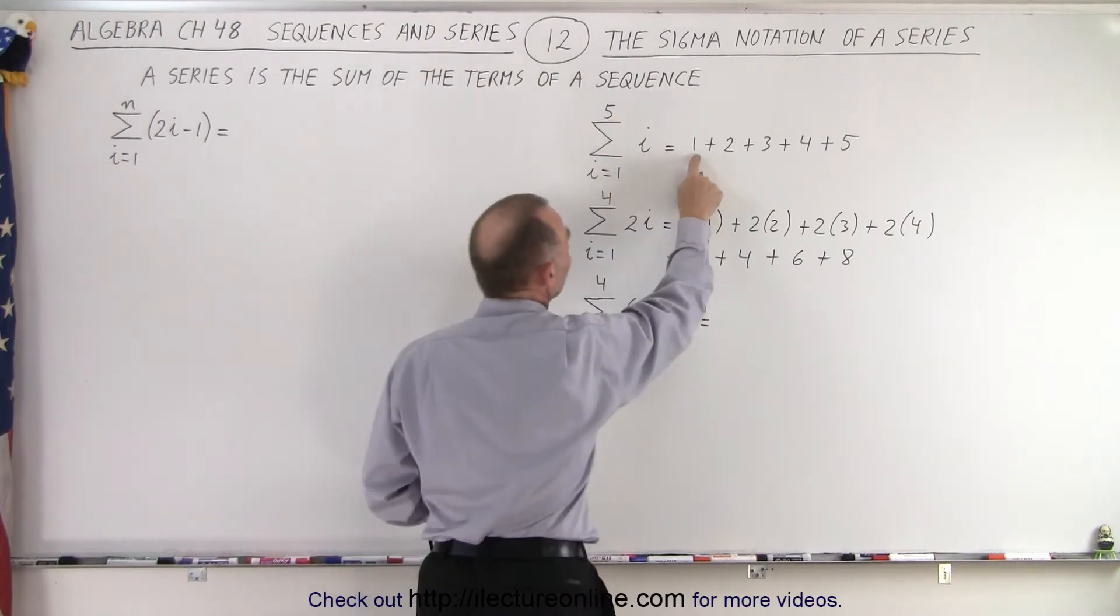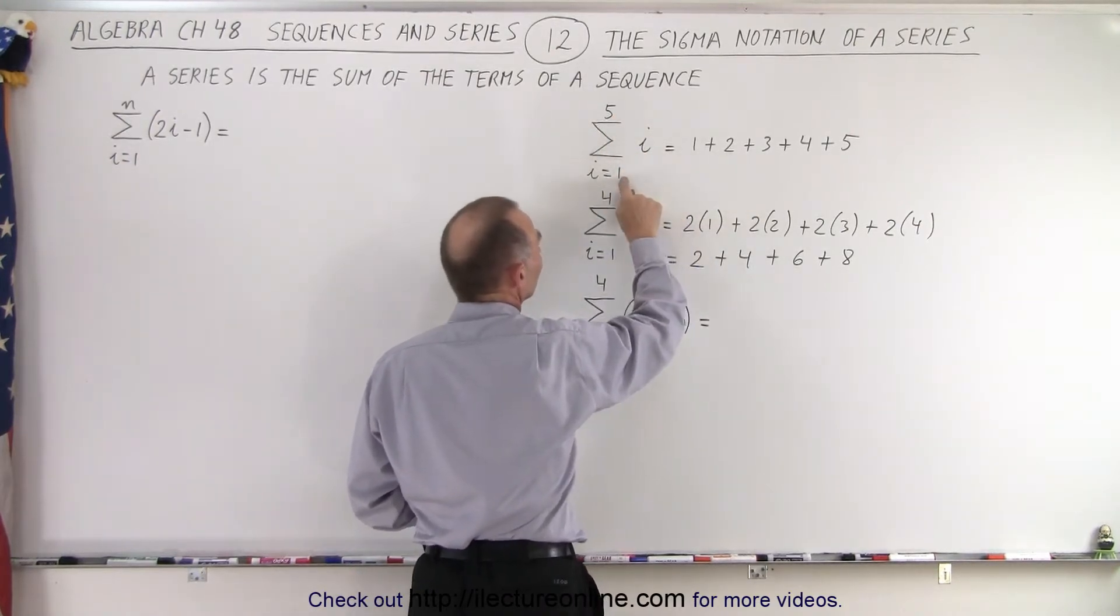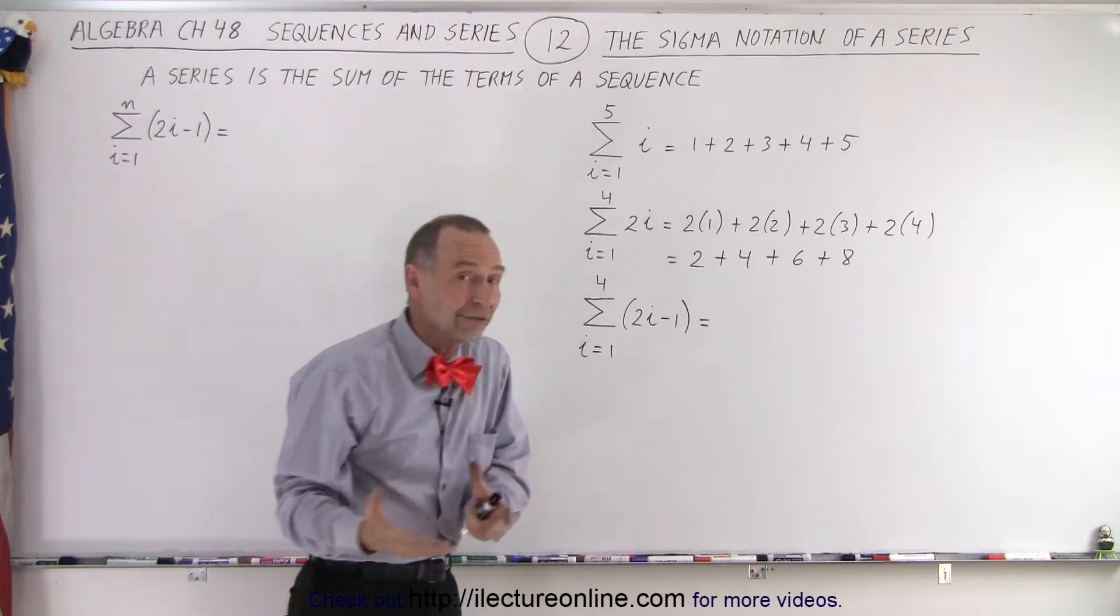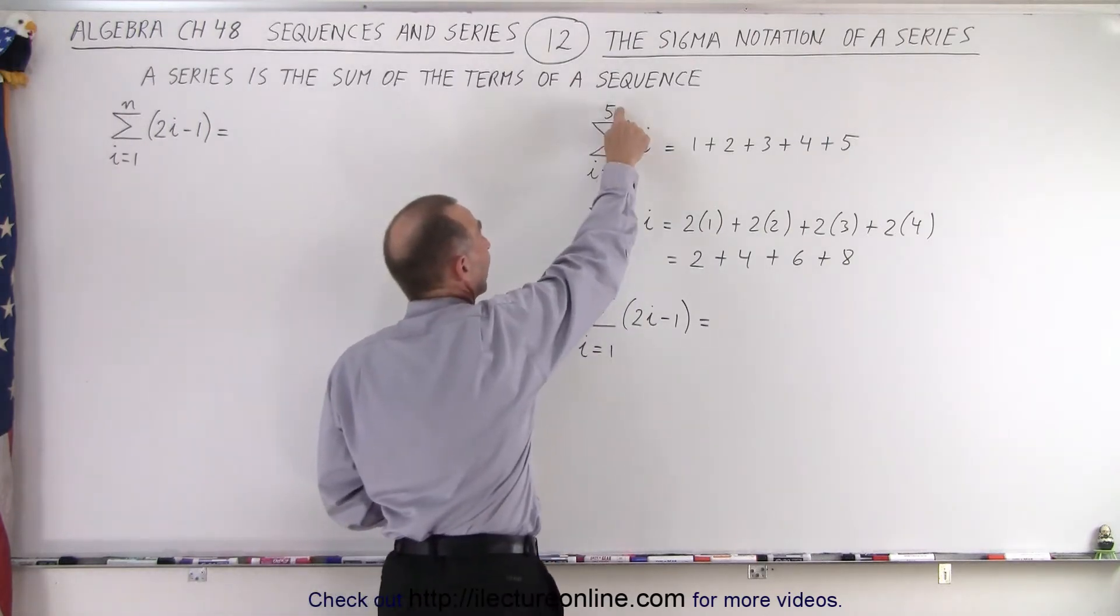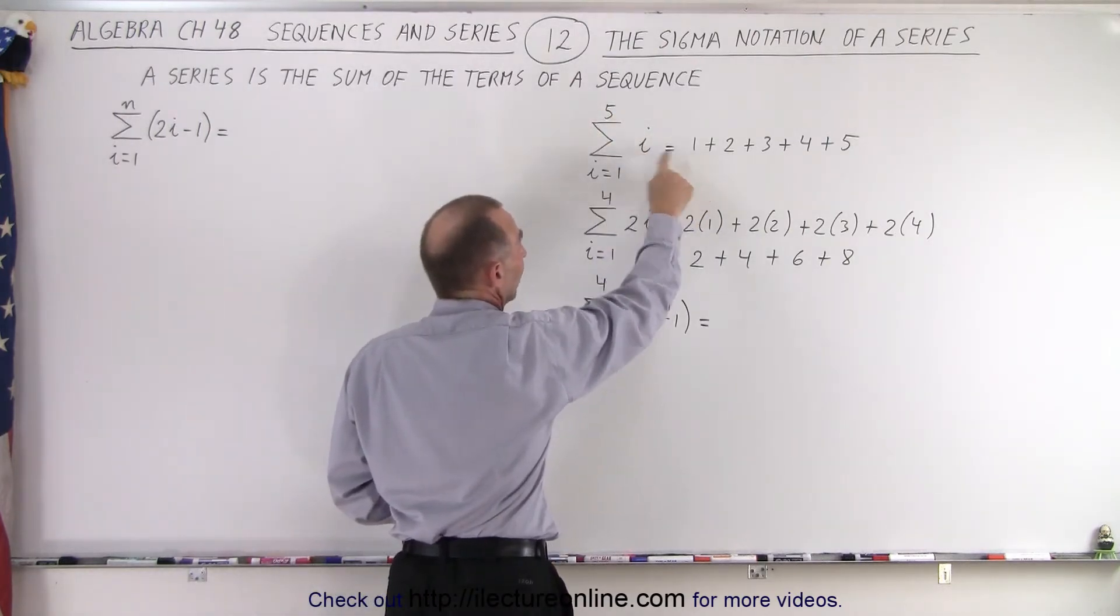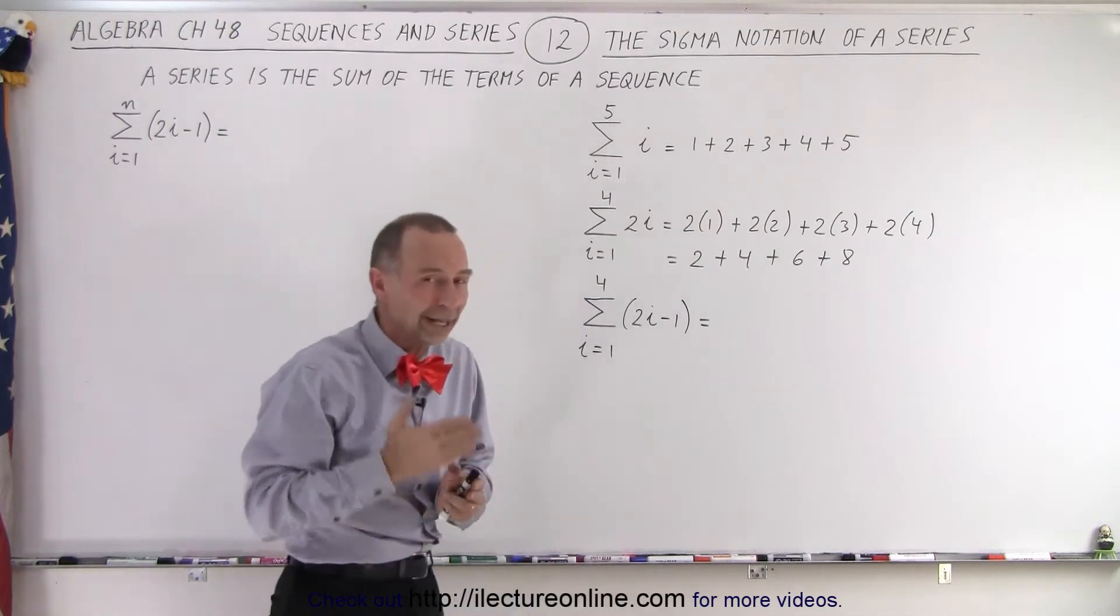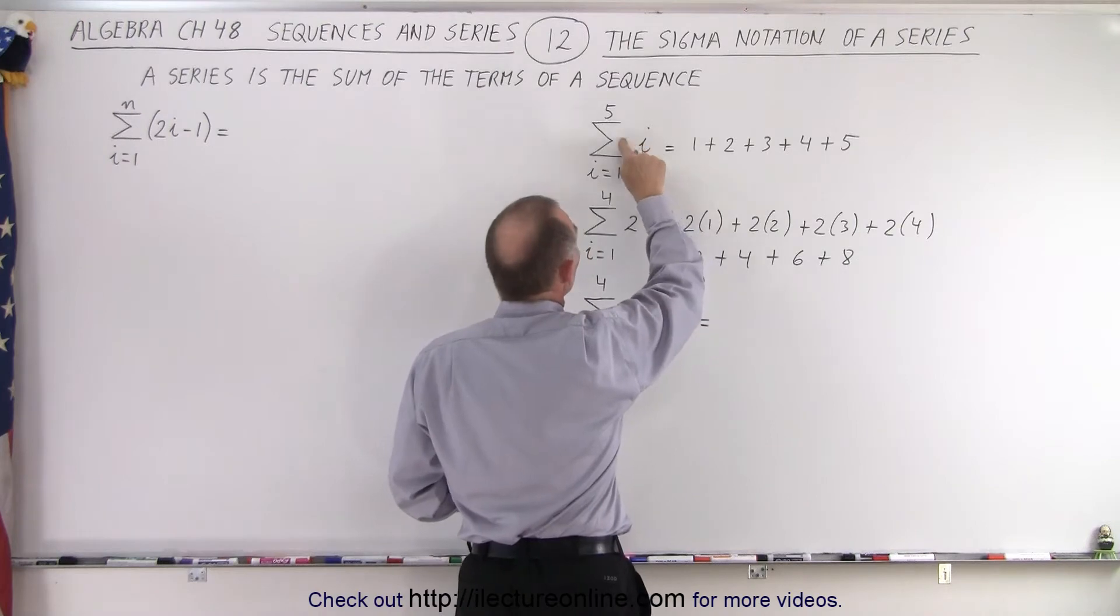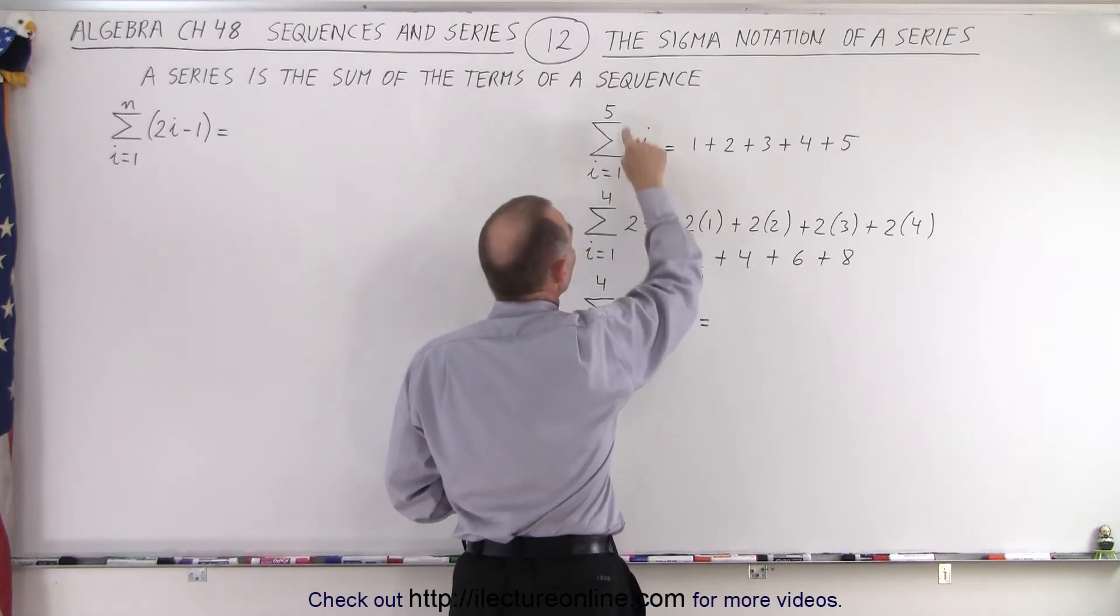So when i is 1 we get a 1, when i is 2 we get a 2, when i is 3 we get a 3, when i is 4 we get a 4, and when i becomes 5 we get a 5. Why don't we go beyond 5? Because the upper limit for i is 5. Why do we start at 1? Because the lower limit starts at 1, it goes up like an integer. And then we simply write the sum. This simply means the sum of all the i's going from 1 to 5.